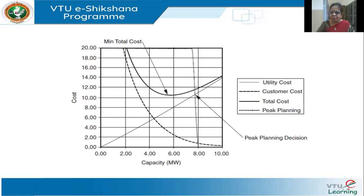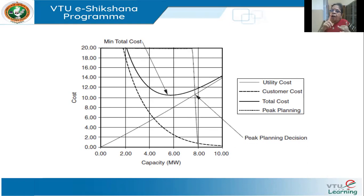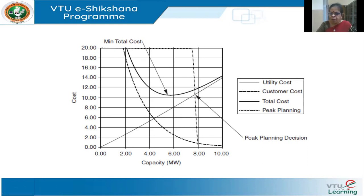If I consider the power system as one and add both the customer cost and the utility cost, I get the total cost or system cost. The total cost forms a U-shaped curve, and there is a minimum total cost at one particular capacity — here it is approximately at 6 megawatts. This represents the optimal planning point.